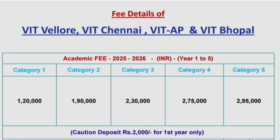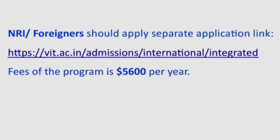Category 5 will be close to 15 lakhs for the full program. There is also a caution deposit payable at the start of the first year only. NRI or foreign students should apply separately through the application link vit.ac.in/admissions/international, and the integrated fee for them will be 5,600 dollars per year. That is the important update on the dates and counseling process.